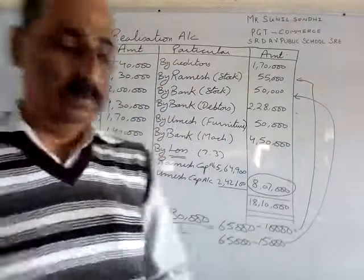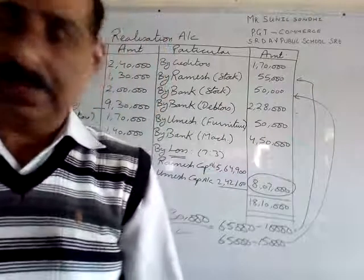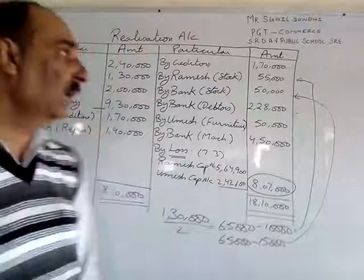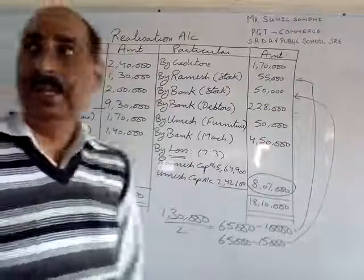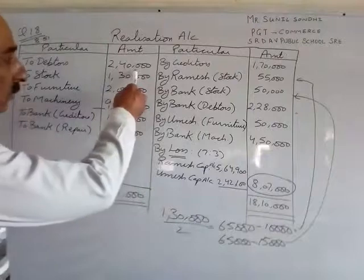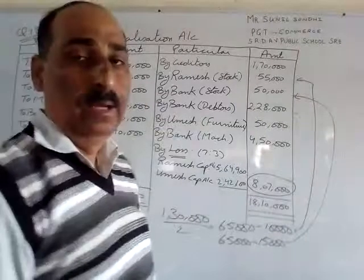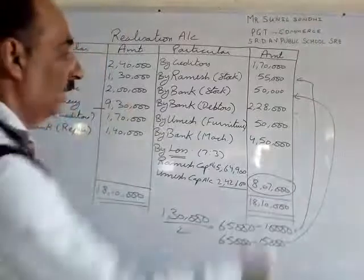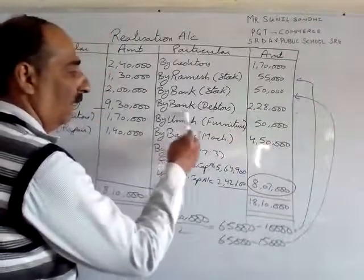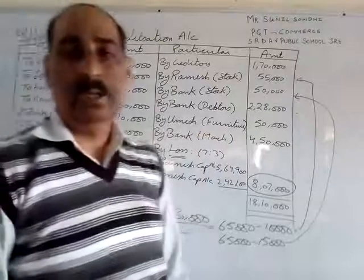Debtors were realized at a discount of 5%. Debtors 2,40,000 hain. 5% aata hai 12,000. To 2,40,000 minus 12,000 = 2,28,000. Entry hogi — by bank (debtors) 2,28,000 rupees.